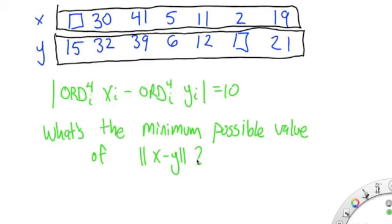Okay, that leads us to our question. So we've got two vectors, x and y, and there are seven components long, and I've helpfully left out two of the digits, two of the values in the vectors. And let's say that we know that the median of x, and the difference between the median of x and the median of y is 10. What's the minimum possible value of the distance between x and y?